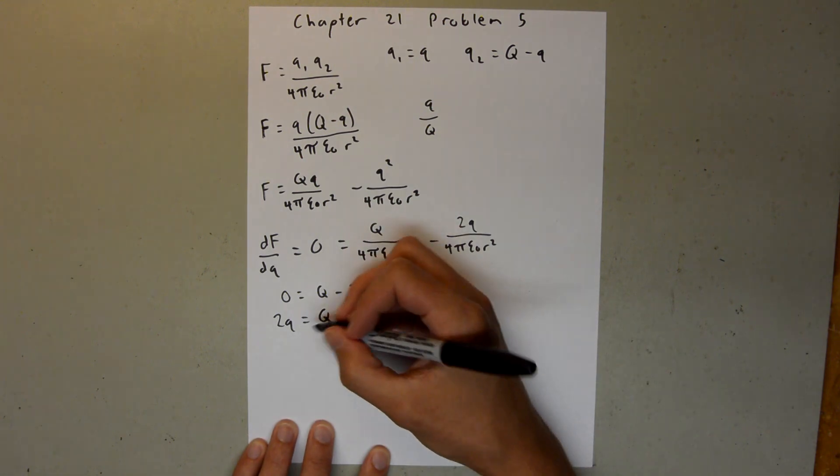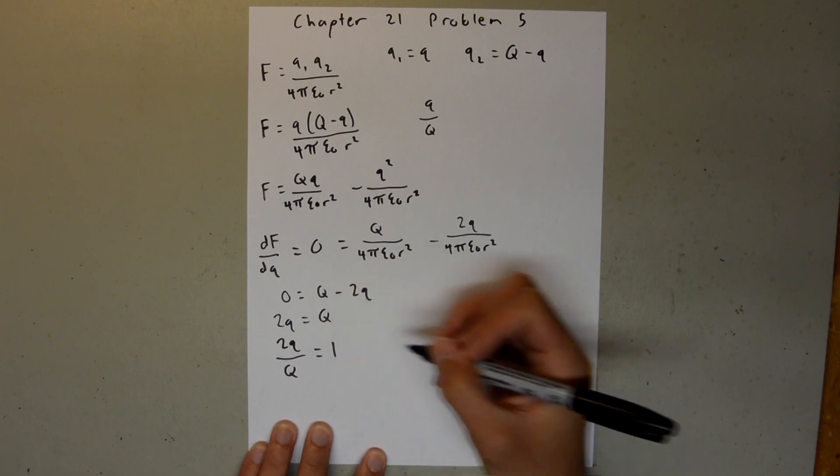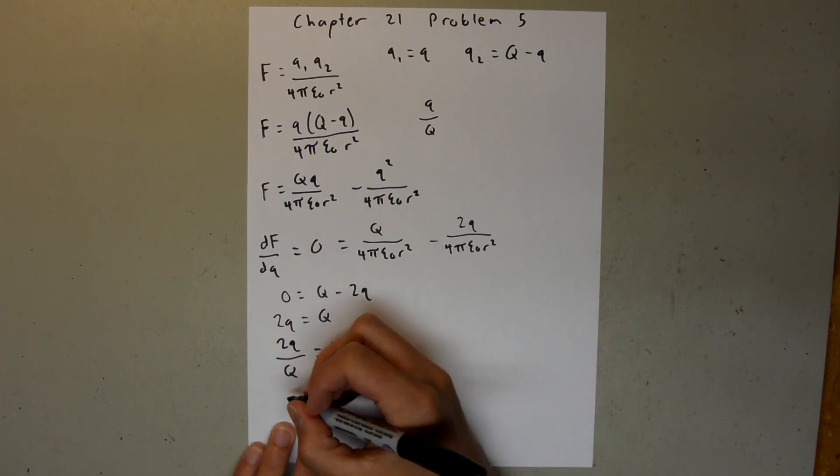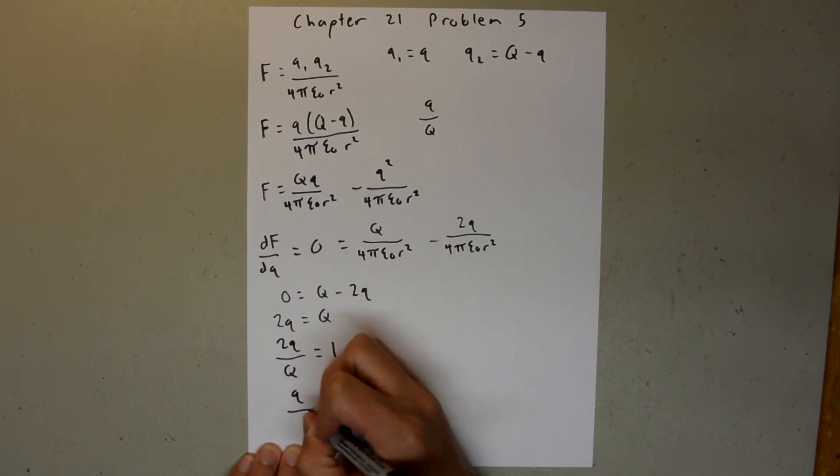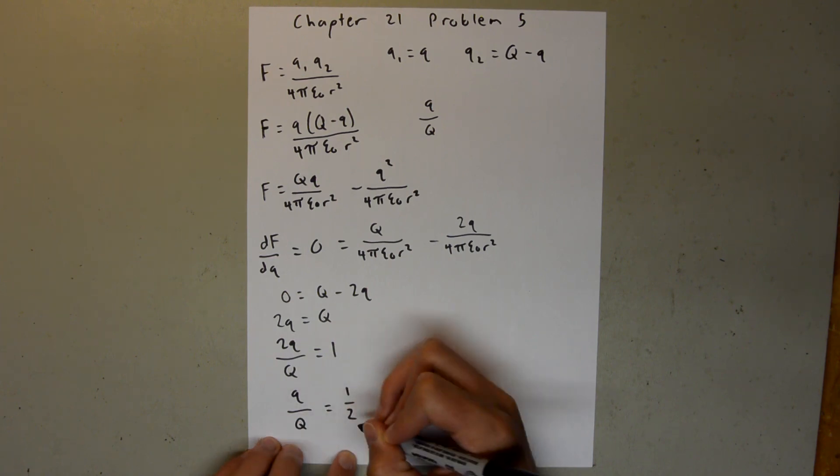And then, we can divide both sides by big Q. That will give us 2q over big Q is equal to 1. And then, divide by 2. And you can see that we will have the ratio of little q to big Q is equal to 1 half.